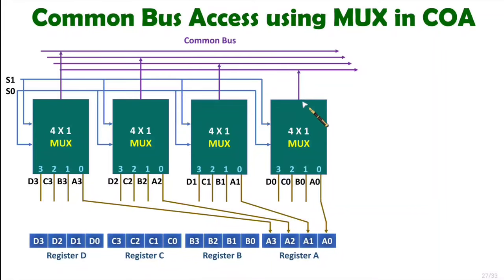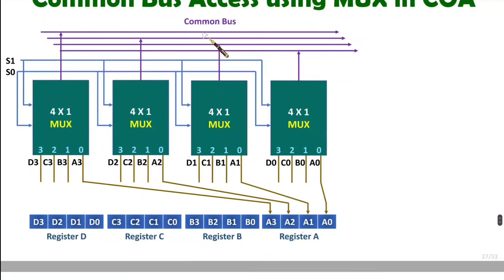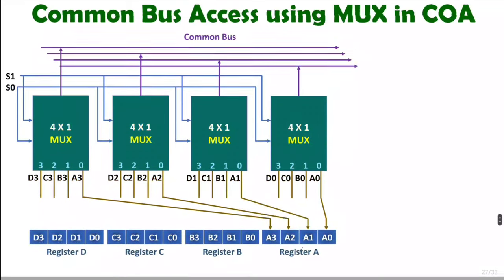The multiplexer's output line is connected with the common bus. So, how can we load the data of any register onto the common bus? Let us try to understand that. For example, if I want to place data of register A on the common bus, then what do I need to do?